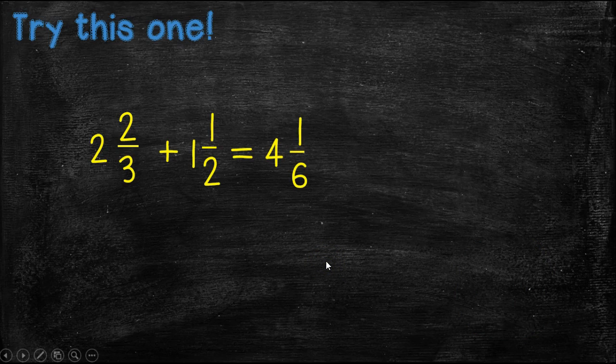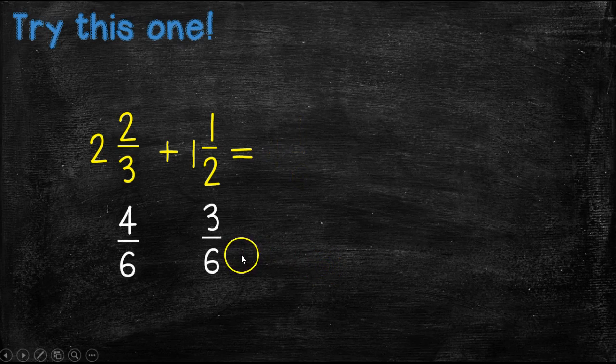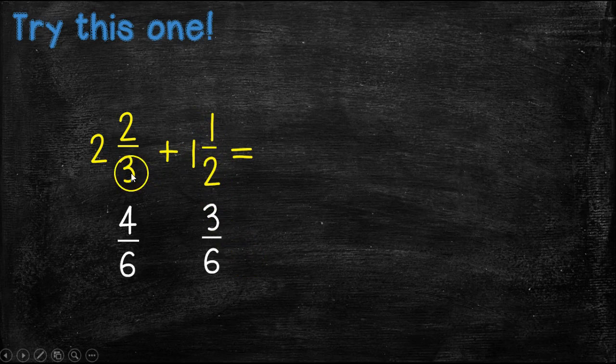Did you get 4 and 1/6? If you did, awesome job, because this was kind of a tricky one. So let me show you how I got it. First, we're just going to worry about the fractions. So in order to find the least common denominator, we know the least common denominator of three and two is six.